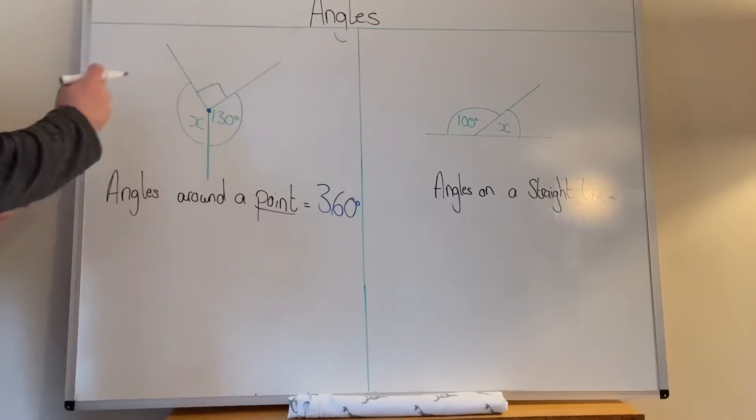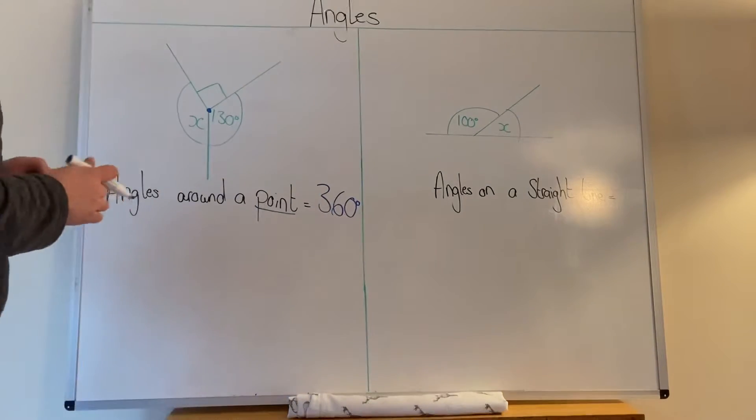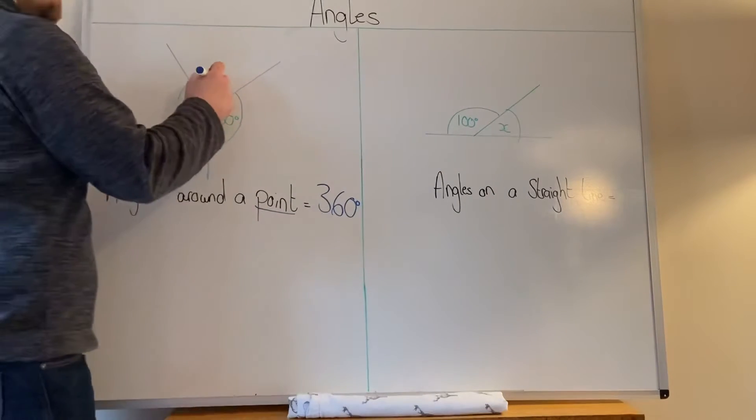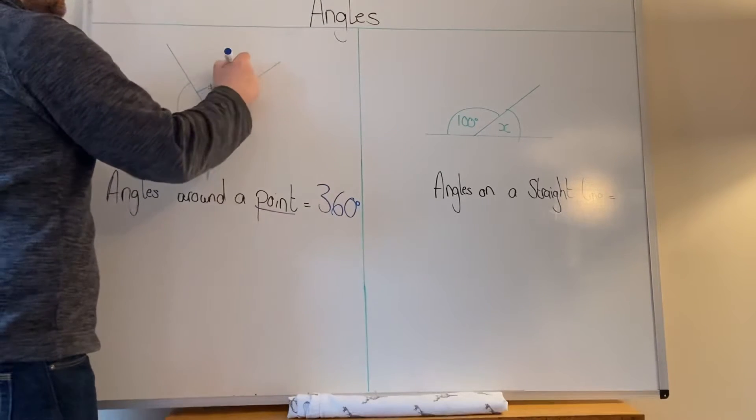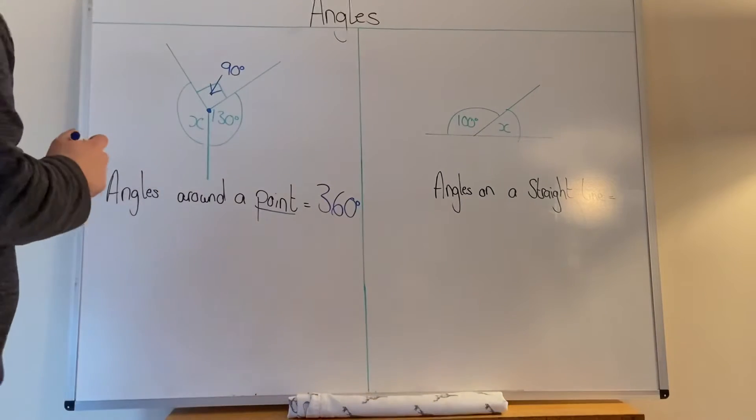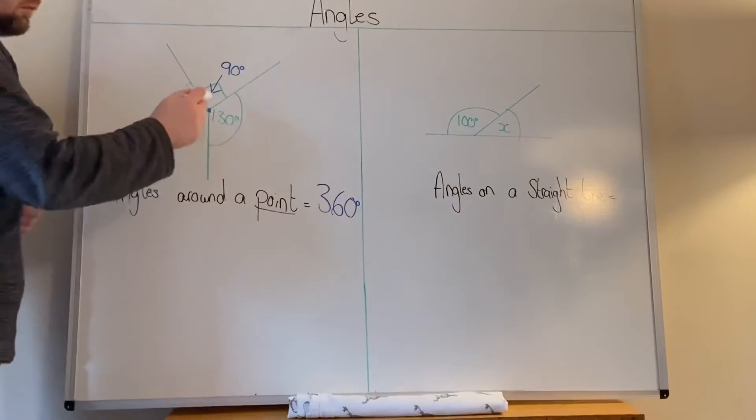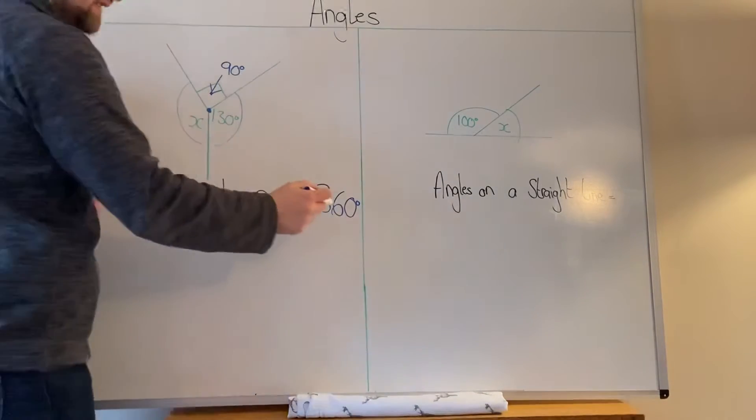So on this one, we've got to find the missing angle. Now we know what this is. If there's a square there, this bit here means that it's 90 degrees. So all of the angles here have to add up to 360 degrees.